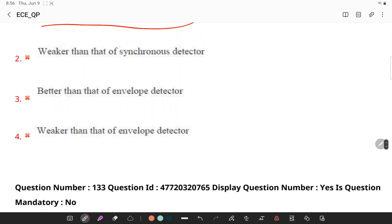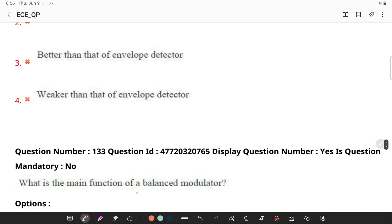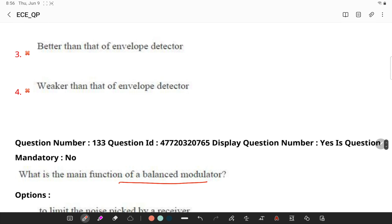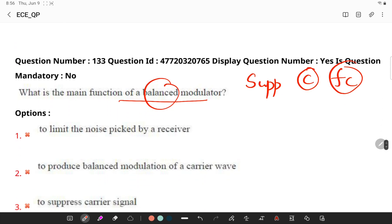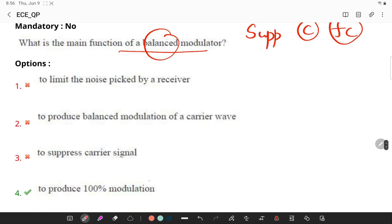Now let's go to the next question. What is the main function of a balanced modulator? So balanced modulator is used to suppress the carrier signal and it is used to create an SSB or a DSB signal. So it is basically used for 100% modulation.